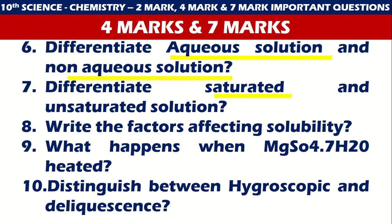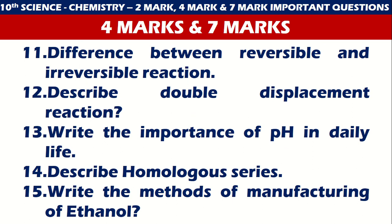Questions 6 to 10 for four and seven marks: differentiate aqueous solution and non-aqueous solution, differentiate saturated and unsaturated solution, write factors affecting solubility, what happens when MgSO4·7H2O is heated, and distinguish between hygroscopic and deliquescent substances.